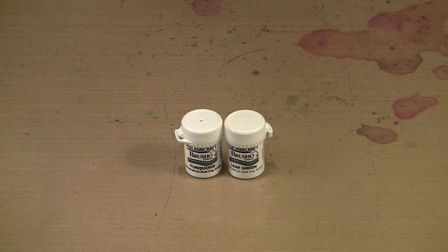Brusho is watercolor paint that has been dried and made into a crystalline form. Unlike typical watercolors that might be a dried cake in a pan or a liquid in a tube, this is in an entirely different form—little crystals.